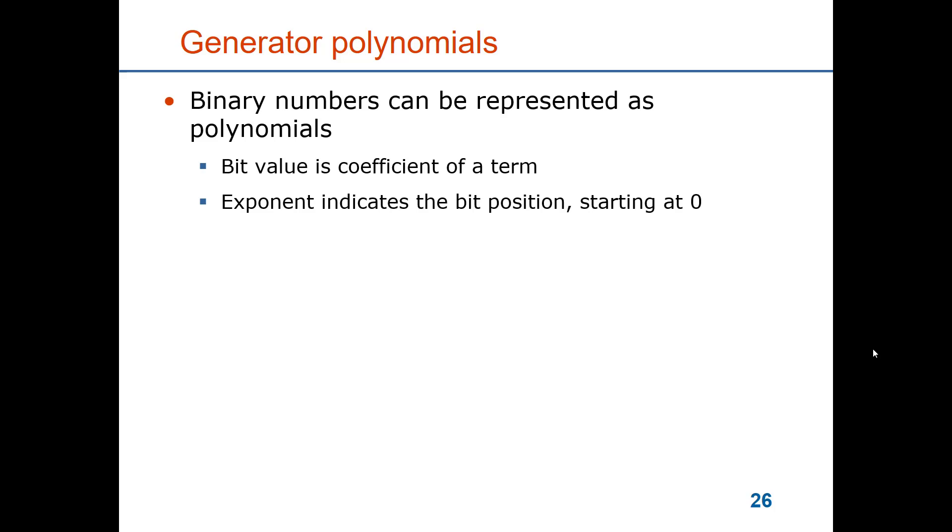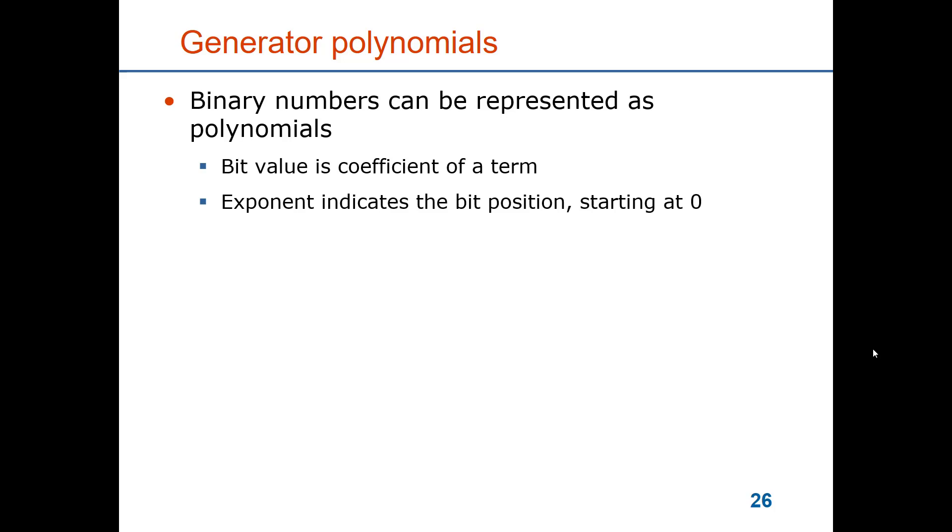So rather than as a string of bits we can see the string of bits as being coefficients of a polynomial where the exponent of each term of the polynomial indicates the bit position. So of course as binary numbers are like decimal numbers, the least significant bit is to the right and the most significant bit or value is to the left.